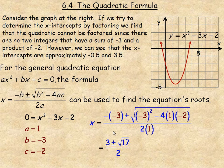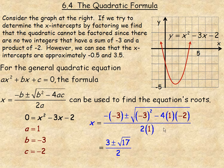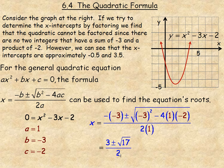Negative negative 3 is 3. Underneath the square root, negative 3 squared is 9. Then we have minus 4 times 1 times negative 2, which gives a negative times negative, so it ends up being plus 8. So 9 and 8 add to 17, giving us 3 plus or minus the square root of 17 over 2 — those are the exact values of the x-intercepts.